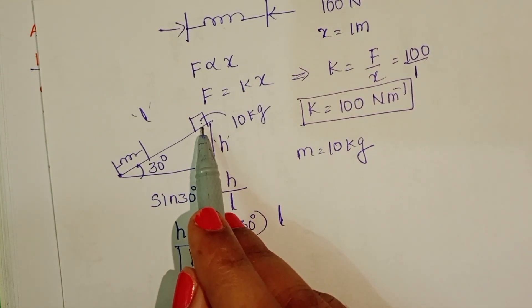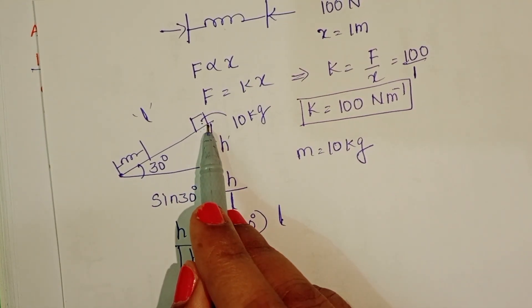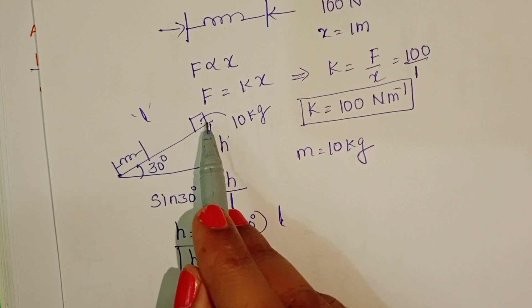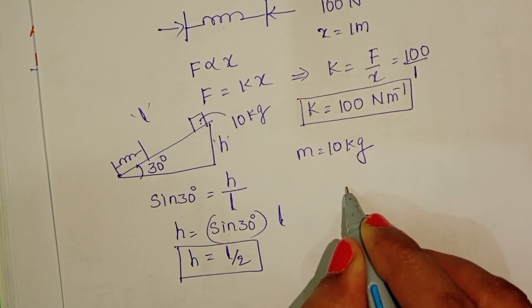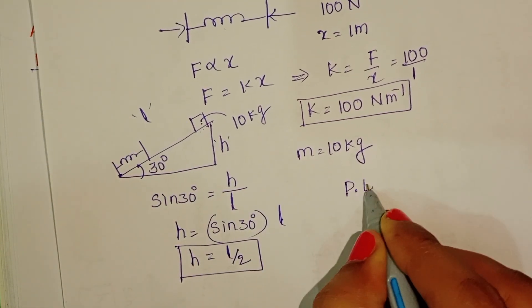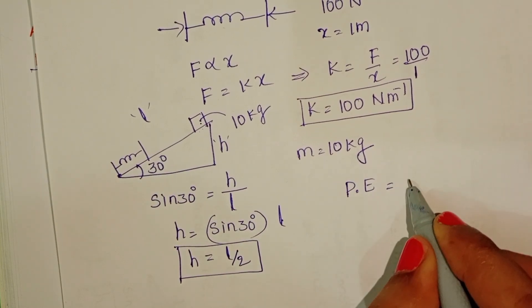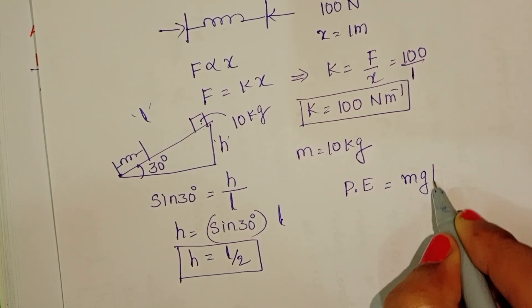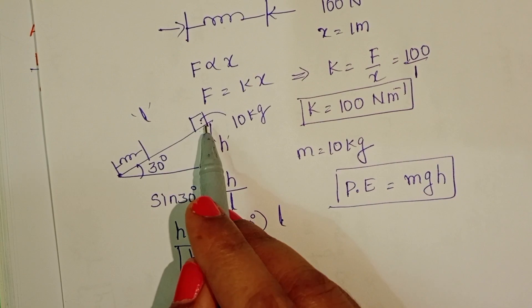The initial energy of the block is potential energy. Why? Because this is at rest position. Potential energy of the block equals mgh.